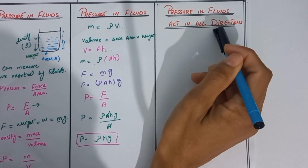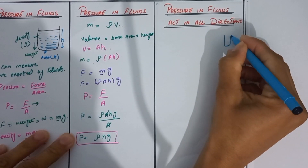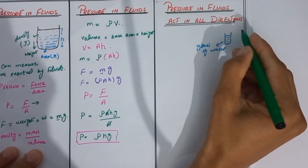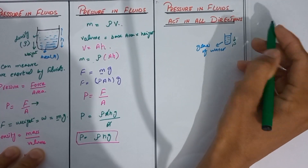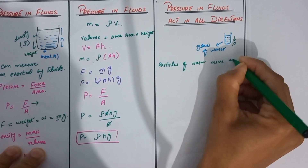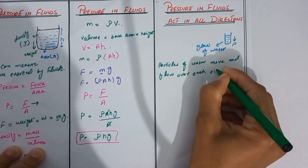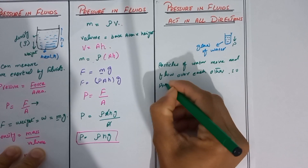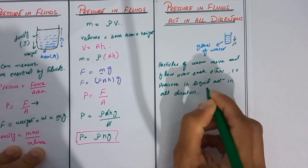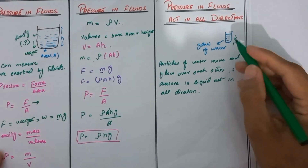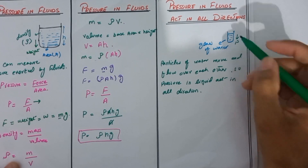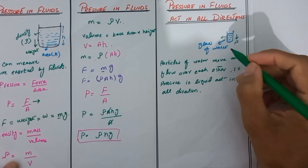Pressure in fluids acts in all directions. If we look at a glass full of water, we cannot say that the pressure is only in the downward direction, because the particles of water are able to move and flow over each other. So pressure in liquid acts in all directions — particles collide with the sides of the container as well.